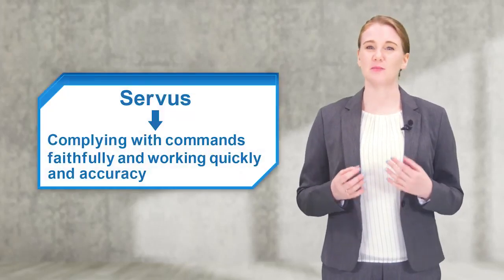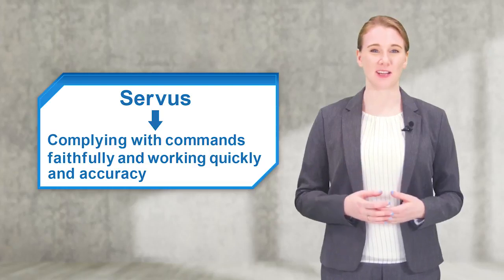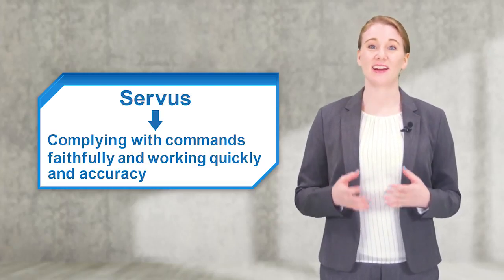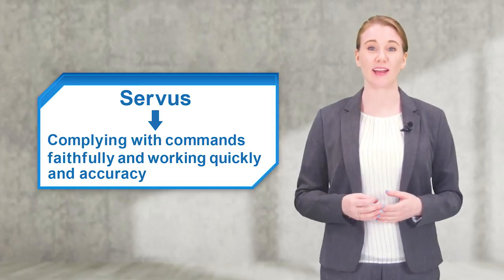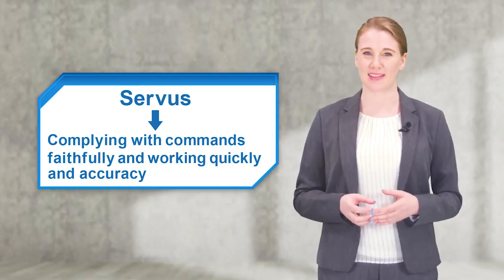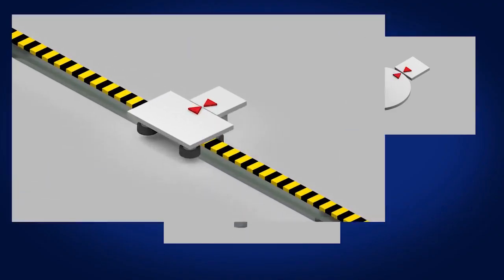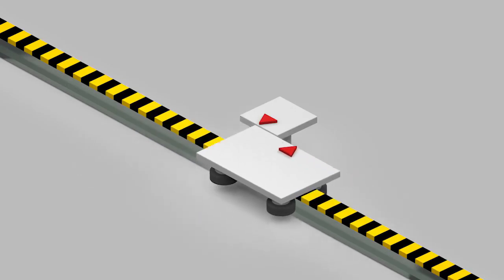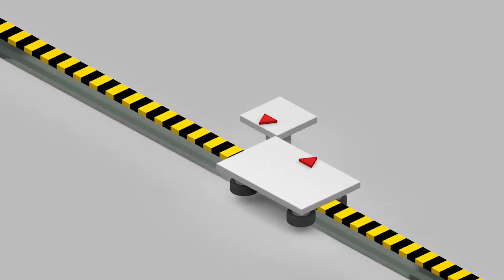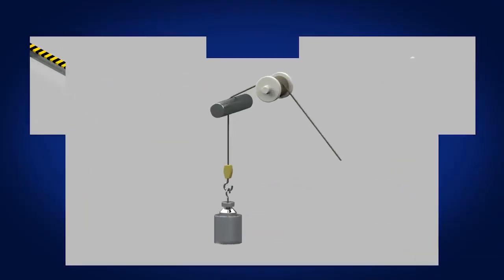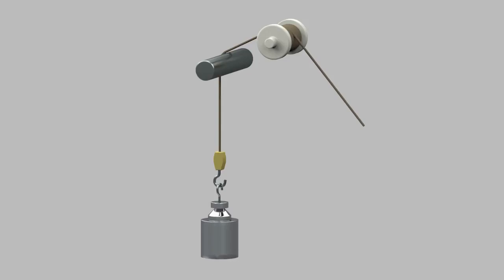The word servo is derived from the Latin word servus. Servus means to comply with commands faithfully, quickly, and accurately. In the same way, a servo is a device that performs work accurately in accordance with commands. Servos are used to start and stop operation at precise positions, to change speeds extremely quickly, and adjust speeds in accordance with conditions.